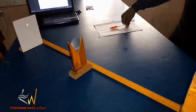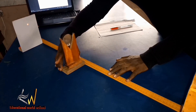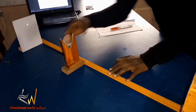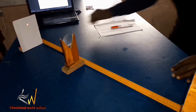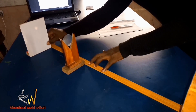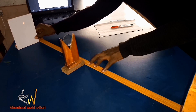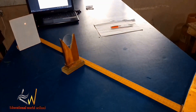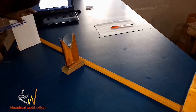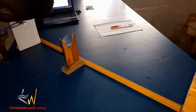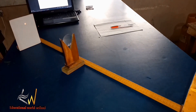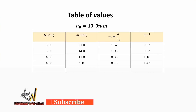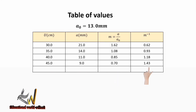We now adjust the position of the lens and lens holder to a distance of 45 cm. After doing that, we adjust the position of the screen so that a clear image is formed — with little or no blur. We measure the diameter of the image formed, and the value is 9.0 mm. In our table of values, when U is 45.0 cm, A is 9.0 mm. The magnification is 0.7 and the inverse is 1.43.